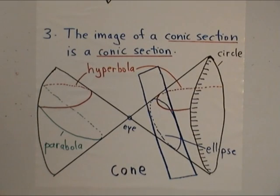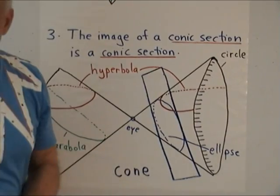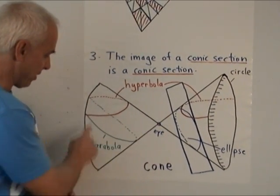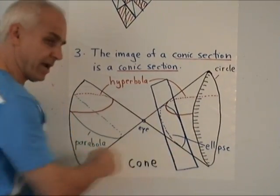And this picture shows that if we take a picture of any one of these conic sections, we're going to get another conic section. For example, if we were right here with our eye, and we wanted to take a picture of the parabola, suppose that our camera film was this plane here.